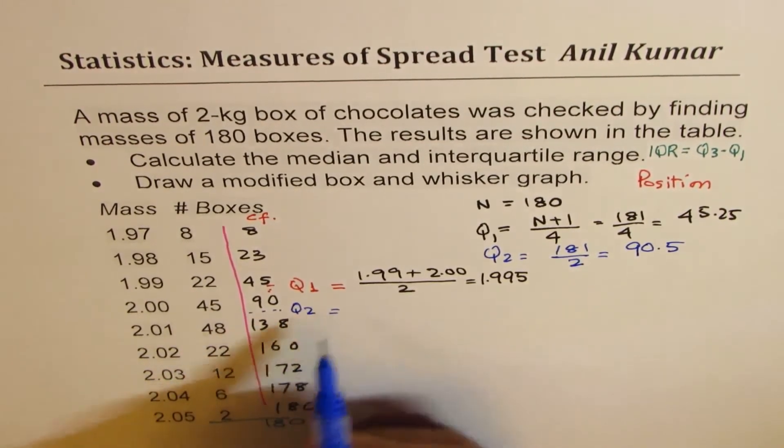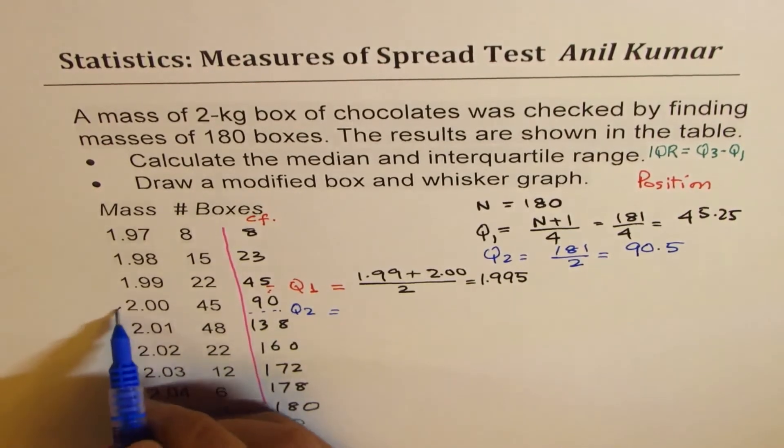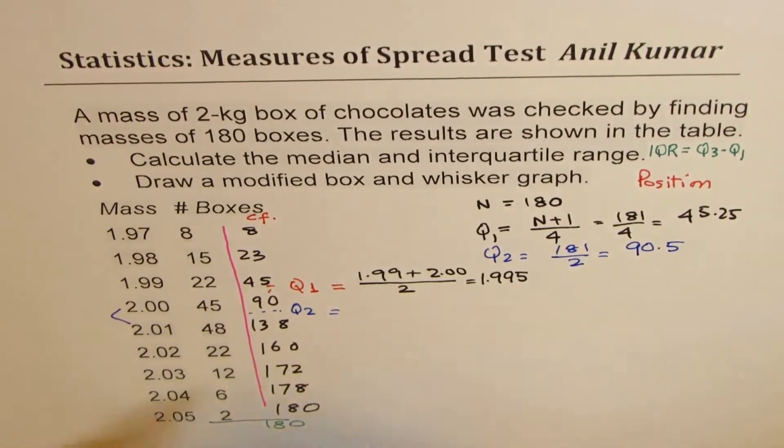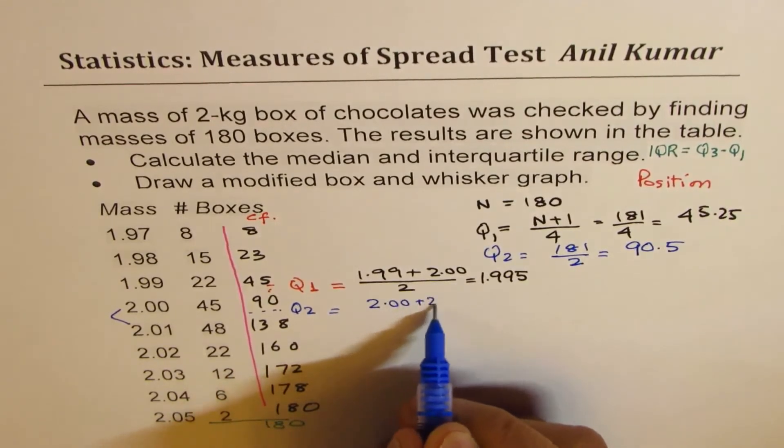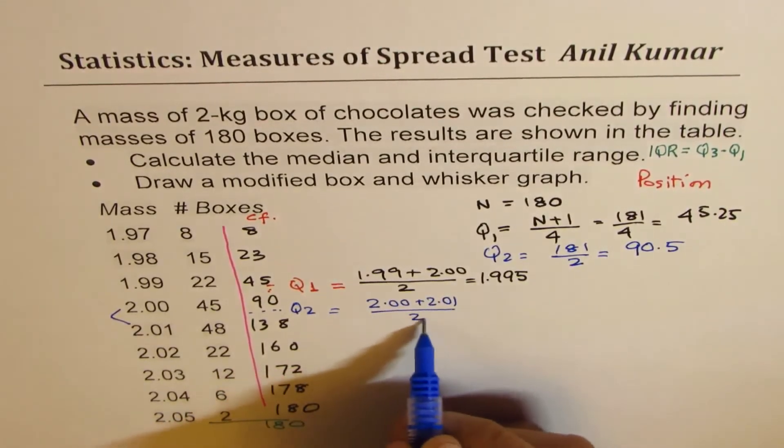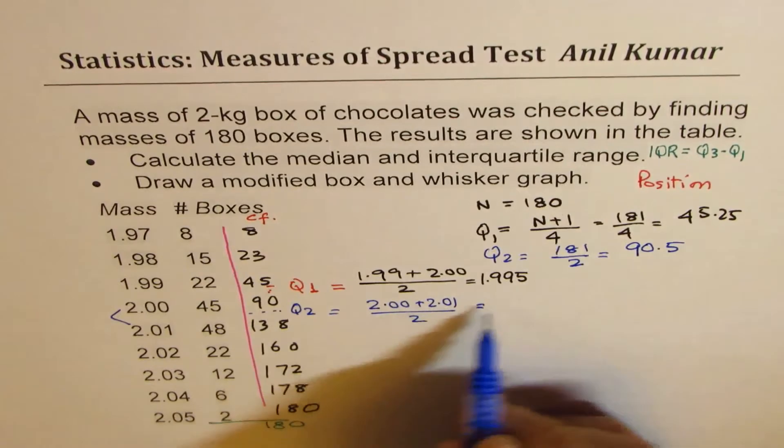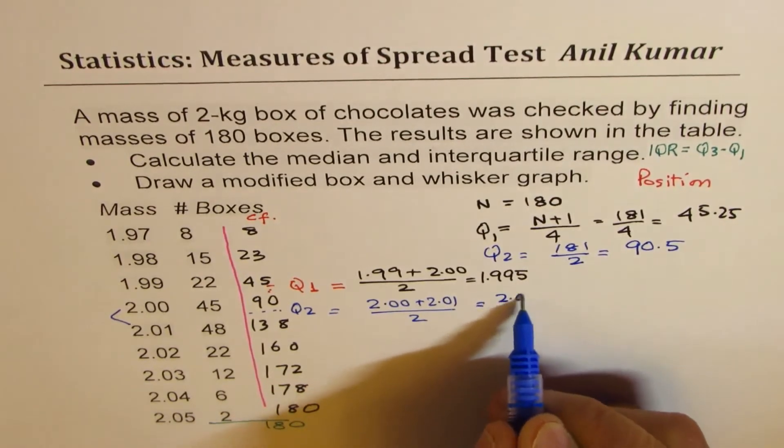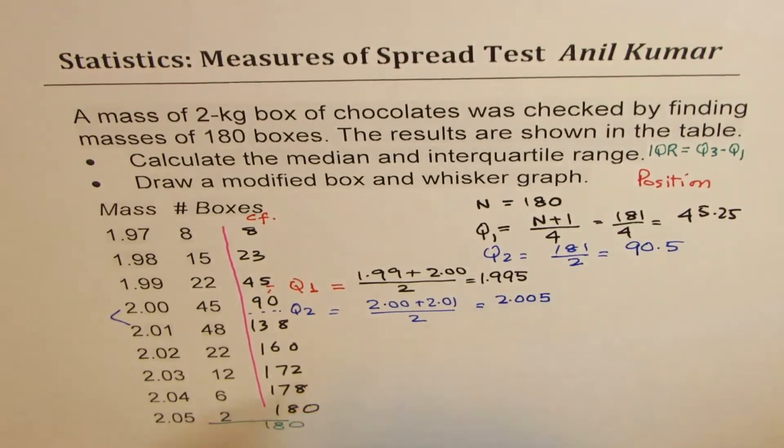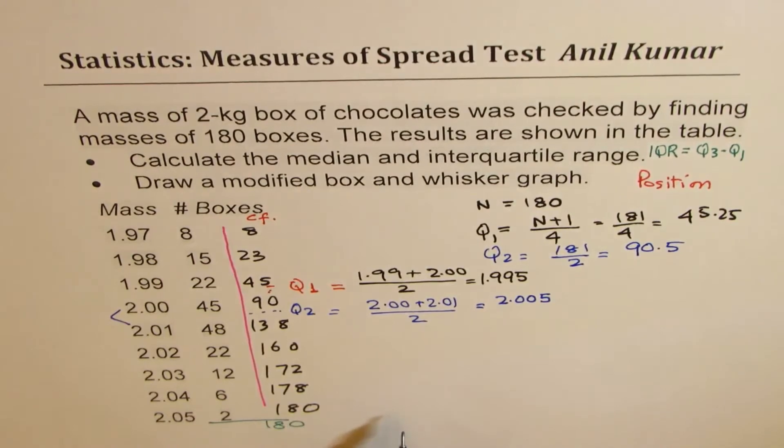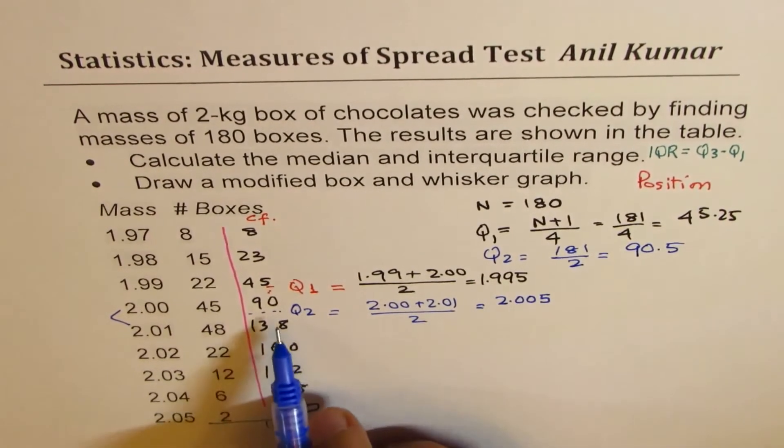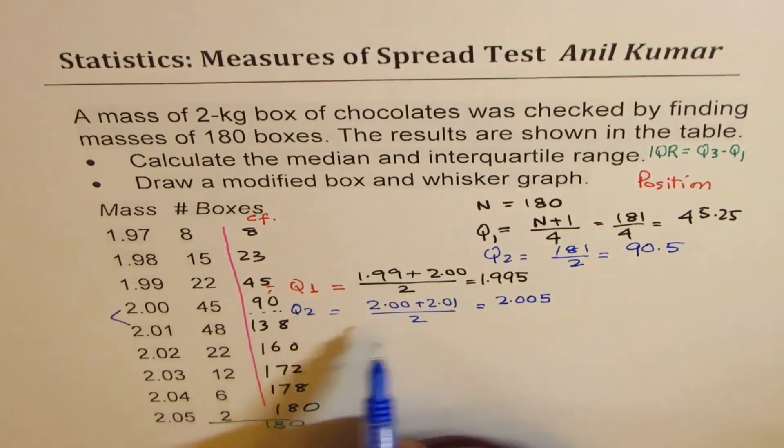So Q2 will be in between these two, that means average of these two values. So it is 2.00 plus 2.01 divided by 2, or it is 2.005. So 2.005 becomes the value for Q2.